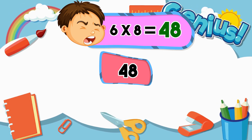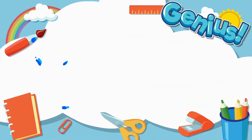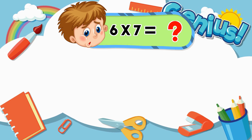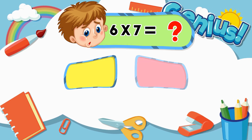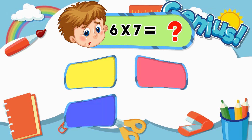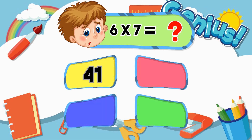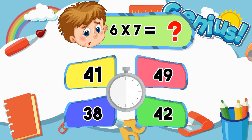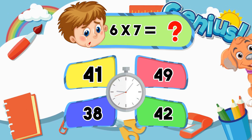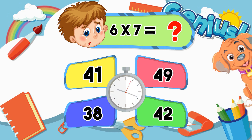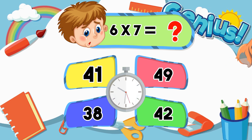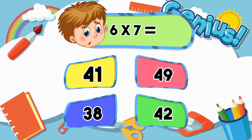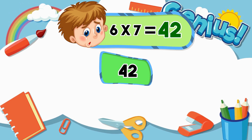What is 6 times 7? Options: 41, 39, 38, 42. The correct answer is 42.